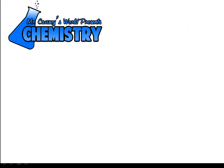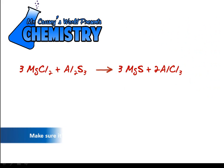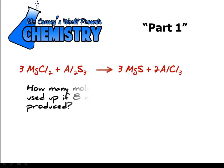We have this chemical equation and you want to make sure it's balanced. For part one we want to know how many moles of magnesium chloride would be used up if eight moles of aluminum chloride were produced. Now working with a problem like this it's all about moles so all you need to do is work with the mole ratio.